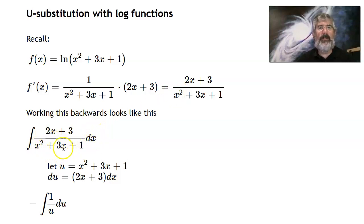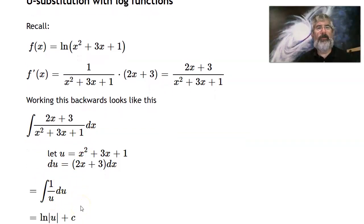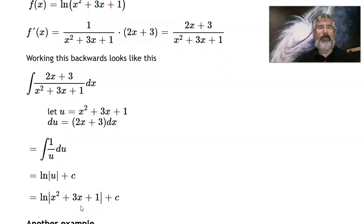If I let u be that denominator, then du would be the derivative of that, which would be 2x + 3 times dx. I've got the 2x + 3 times dx there, so that just all turns into a 1 du, and then the denominator is just u. And now I've got the integral of 1 over u du, which is the log of the absolute value of u, which, plugging back the u in, is the log of the absolute value of x² + 3x + 1 plus a constant.